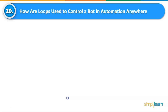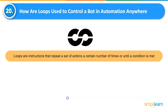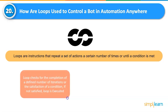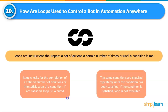How are loops used to control a bot in Automation Anywhere? Loops are one of the most powerful bot-building constructions. They are instructions that repeat a set of actions a certain number of times or until a condition is met. When a loop checks for the completion of a defined number of iterations or satisfaction of a condition — if not satisfied, the loop is executed again. The same conditions are checked repeatedly until satisfied; if the condition is satisfied, the loop is not executed.